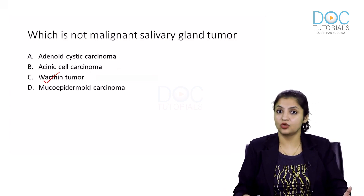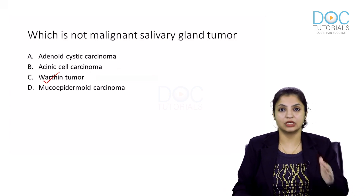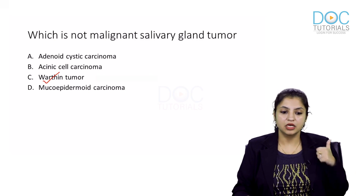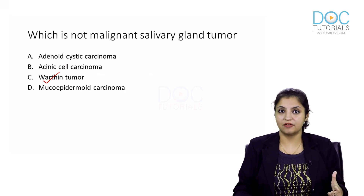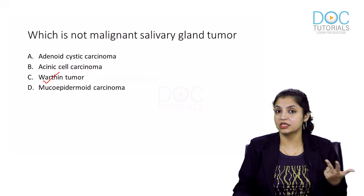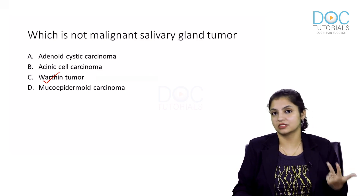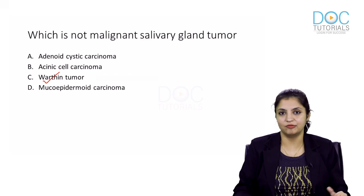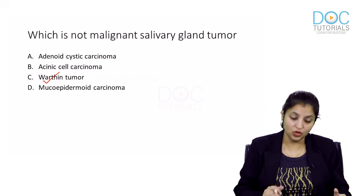Warthin tumour has lots of uniqueness: it occurs more in males, smoking is a definitive risk factor, the other name is papillary cystadenoma lymphomatosum, and oncocytic change is a feature.